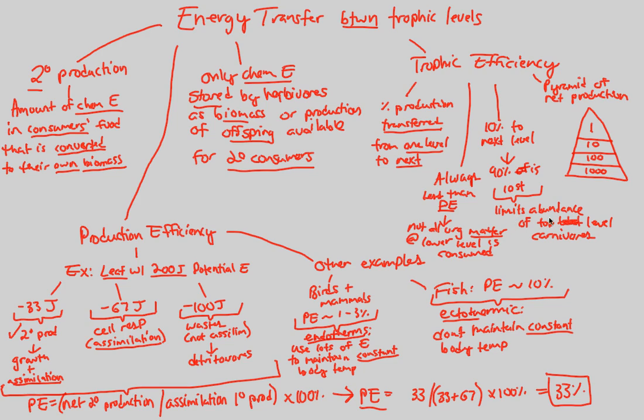What are we doing right here? We're limiting the abundance. Look at this one right here. Limiting the abundance of top-level carnivores. There's only one. There's only one chance here.